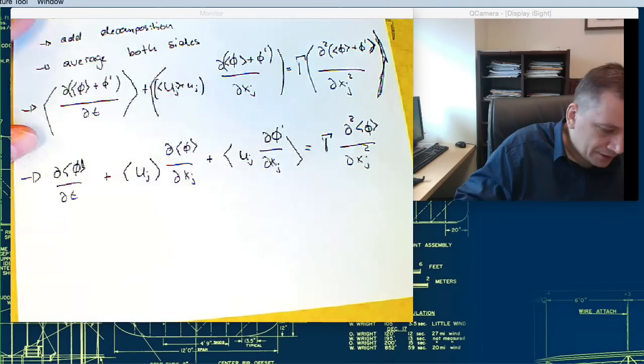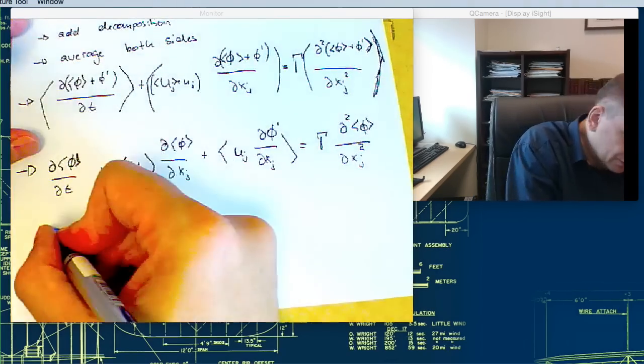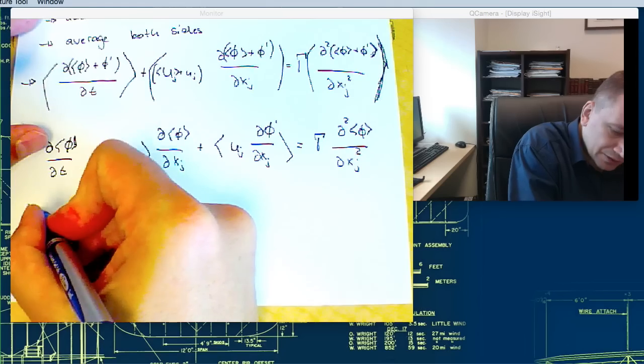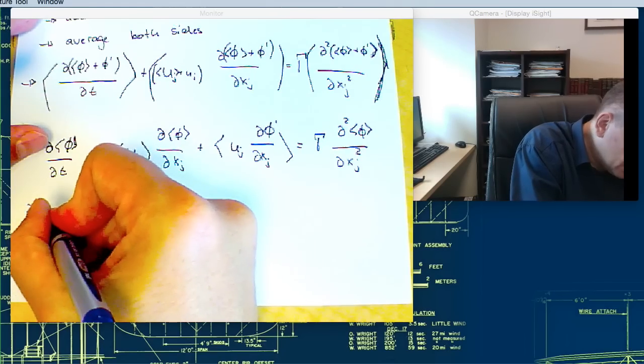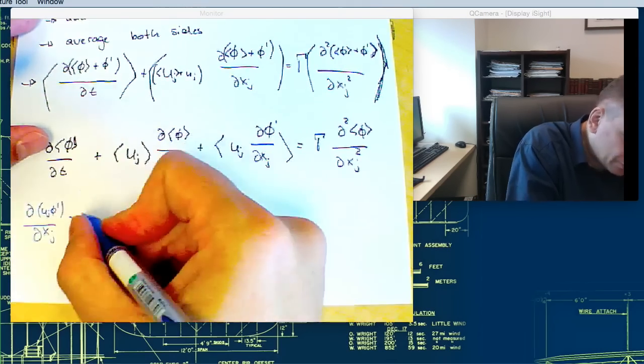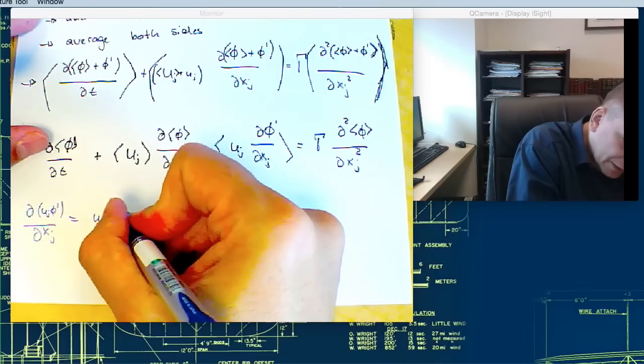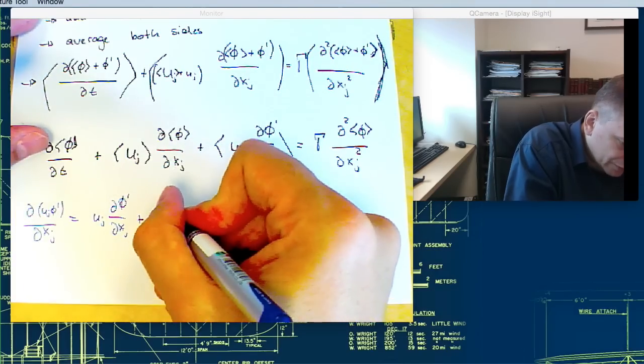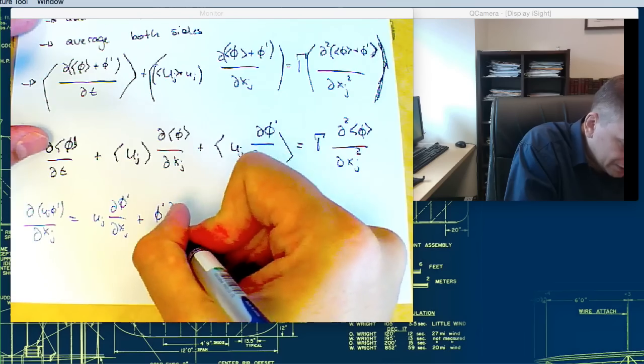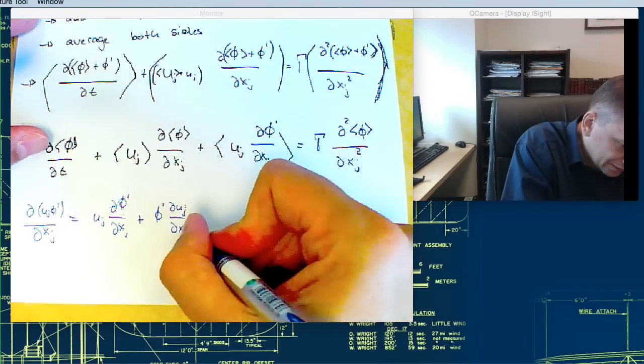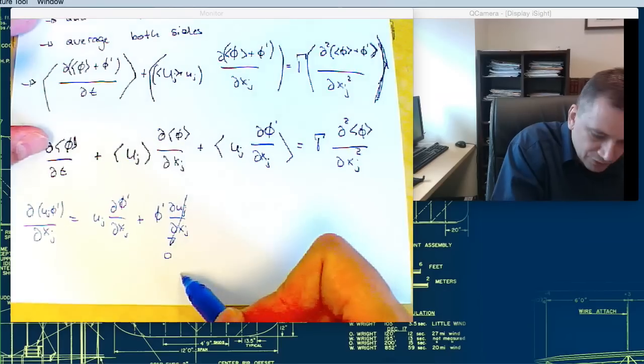Again this part here, we can rewrite. If you have ∂(u_j φ')/∂x_j, using the product rule, we have u_j ∂φ'/∂x_j plus φ' ∂u_j/∂x_j. This one is zero because of the continuity equation.